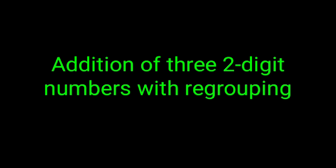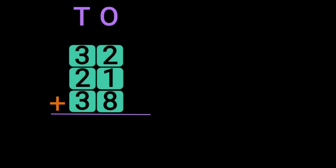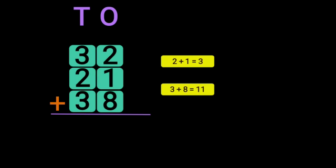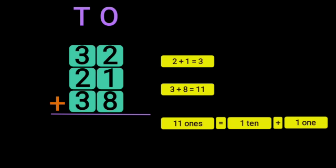Let us do the example of addition of three two-digit numbers with regrouping. We have 32 plus 21 plus 38. Begin the addition by first writing down the place values 1's and 10's. Add the digits in the 1's place: 2 plus 1 gives you 3, and 3 plus 8 gives you 11. So now you have 11 ones, and 11 ones can be regrouped as 1 ten plus 1 one. Write down the 1 in the 1's place and take the 1 ten as a carry over to the 10's place.